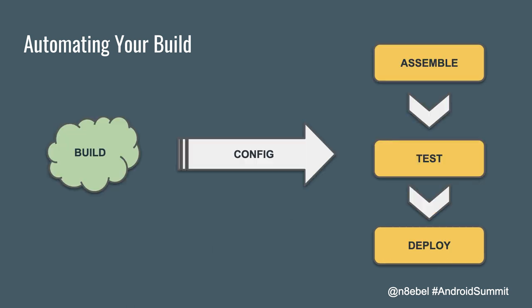A build is really just a server somewhere that has a configuration telling it what tasks to run to generate your build or automate quality checks. Those tasks might include an assemble task, a test task, or a deploy task — the same types of tasks you're running from the command line with Gradle. For example, running `./gradlew assemble` from the command line would correspond to the assemble task within your build configuration.